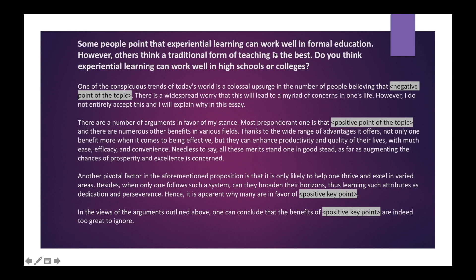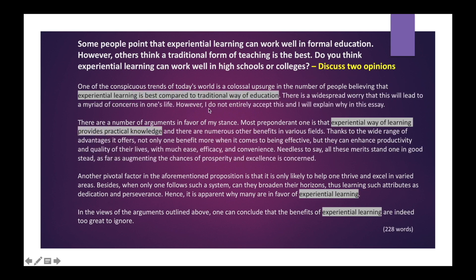Next example: "Some people point out that experiential learning can work well in formal education. However, others think a traditional form of teaching is the best." What type of essay is this? Experiential learning and traditional form of teaching — two points are mentioned, and the question is asking for your opinion, so "discuss two opinions" is the prompt. Again mention which side you don't support negatively in the introduction. People believe that experiential learning is best compared to traditional education — here traditional education is mentioned negatively. But I am not accepting it; I am supporting experiential learning as the best. The conclusion also supports experiential learning. Read the entire essay once for proofreading.